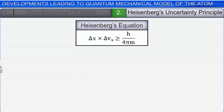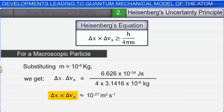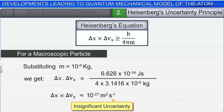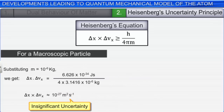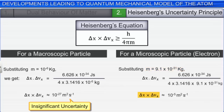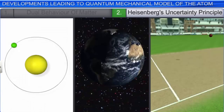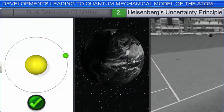For example, if the uncertainty principle is applied to a macroscopic object weighing a milligram (10⁻⁶ kg), the value of the product of ΔV and ΔX is extremely small; therefore, the associated uncertainty is also insignificant. On applying this uncertainty principle to a microscopic particle like an electron, having mass equal to 9.1 × 10⁻³¹ kg, we find that the product of ΔV and ΔX is significant enough and therefore cannot be ignored. Hence, Heisenberg's uncertainty principle holds significance only for motion of microscopic particles and not for macroscopic objects.